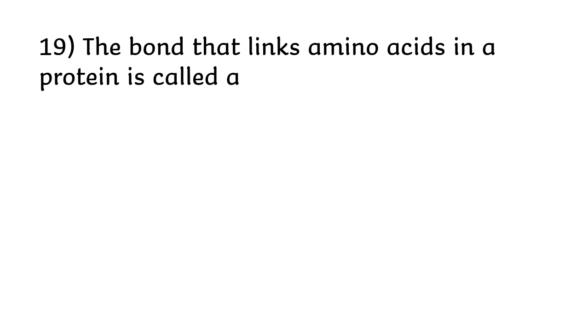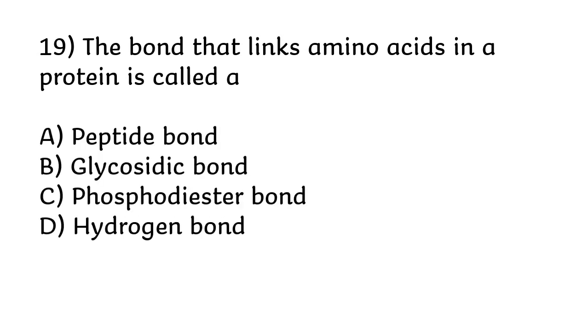The bond that links amino acids in a protein is called: peptide bond, glycosidic bond, phosphodiester bond, or hydrogen bond. The correct answer is option A, peptide bond.